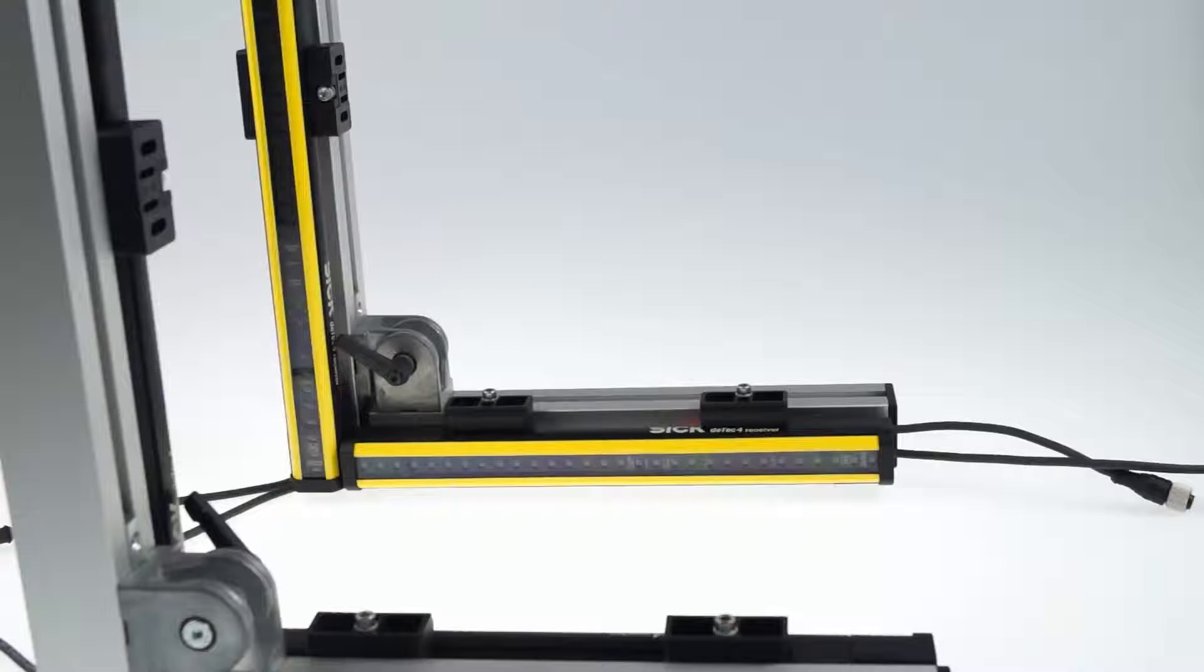If beam coding is configured, the field LEDs flash once yellow for code 1 and twice yellow for code 2 each time the system starts up.